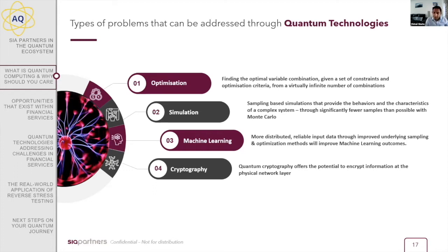Simulation is another big one. Quantum computing can enable sampling-based simulation — already done today using Monte Carlo systems — but quantum sampling allows the characteristics of a complex system to be determined through far fewer samples than possible with Monte Carlo. This is exciting when thinking about financial services, where Monte Carlo is used very widely. Machine learning is more in the longer term: quantum-enabled machine learning can train models much faster, process data quicker, and train with less data. Cryptography is important too: quantum's potential impact on prime number factoring — the basis of all cryptography — means classical computing cryptography will be essentially unviable if quantum computing reaches full scale.